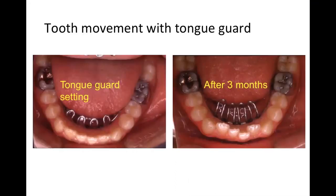This is a case in which a tongue guard was attached to the lingual side of the incisors to eliminate contact of the tongue with the mandibular incisors. As shown on the right photograph, the incisors had moved to the lingual side after a few months. This was possibly induced by the force of the lips from the outside of the dental arch.